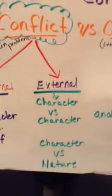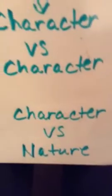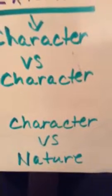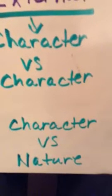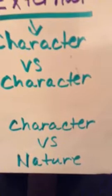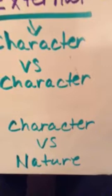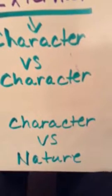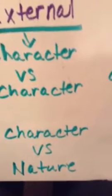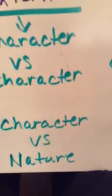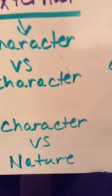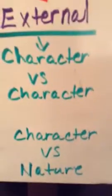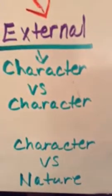With character versus nature, you're talking about maybe something with an animal, or something with the weather — perhaps a storm, a hurricane, a tornado. But it can also be something like a sickness; a disease would actually be character versus nature.